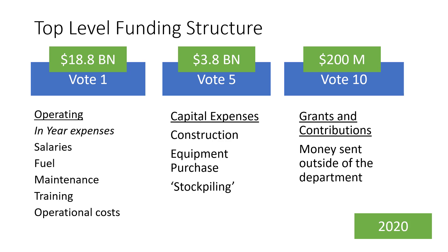In future videos, we'll be focusing our attention on those two votes. To recap: we have Vote 1, Vote 5, and Vote 10. Vote 1 is operating, and Vote 5 is capital. See you in the next lesson.